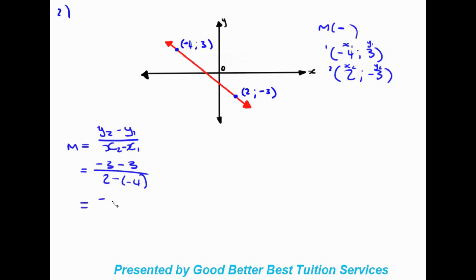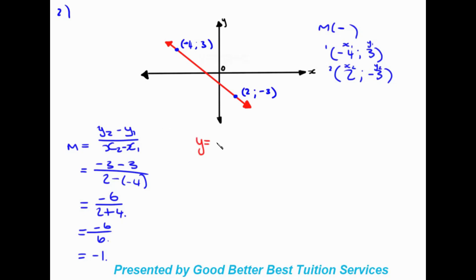Working this out: we get negative six on top, and two plus four on the bottom, giving us negative six over six, so the gradient is negative one. Writing that in our equation: y = -x + c — since it's negative one times x, we don't need to write the one, just negative x plus c.